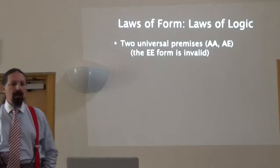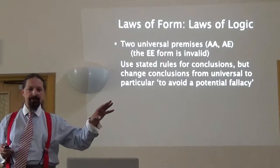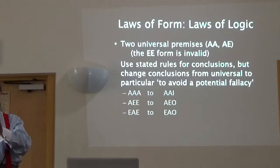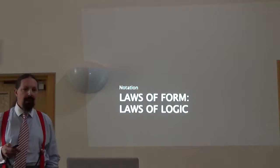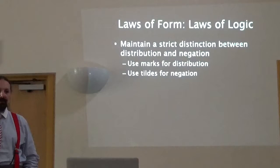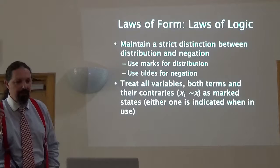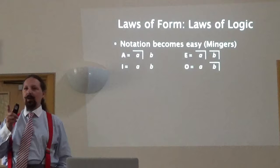When it comes to the nine controversially valid forms, they are only relevant to pairs of universal premises — AA and AE. We've already eliminated EE ones. We change the conclusions from universal to particular to avoid a potential fallacy — so A changes to I, E changes to O. The nine valid forms arise from different figures. What I'm proposing is to maintain a strict distinction between negation and distribution. We use marks for distribution and tildes for negation, and treat variables — whether they are terms or their contraries — as marked states.